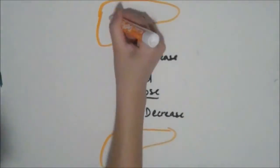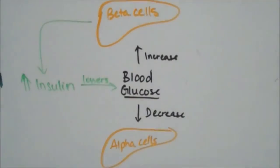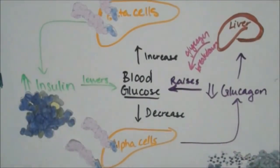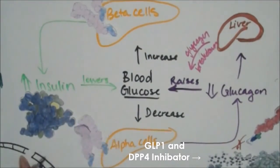Glucagon and insulin are antagonistic hormones that work in opposing ways to regulate blood glucose levels. So by inhibiting glucagon, it prevents the liver from breaking down glycogen into glucose.